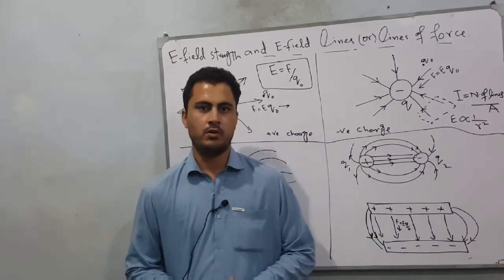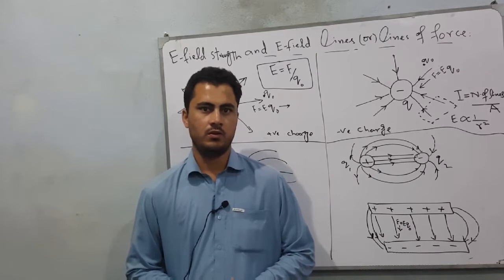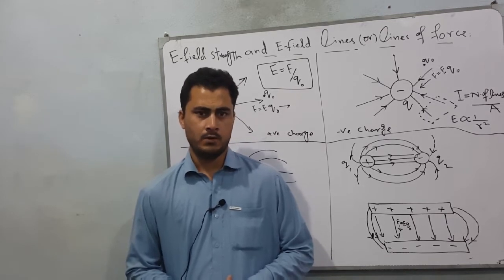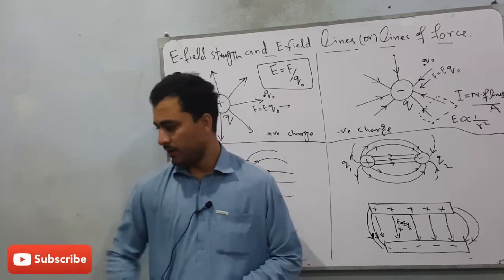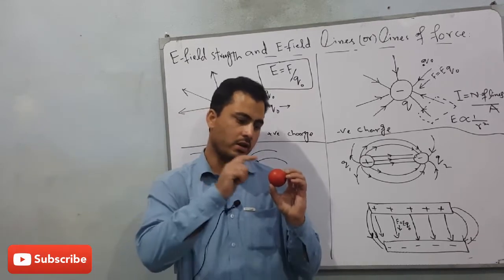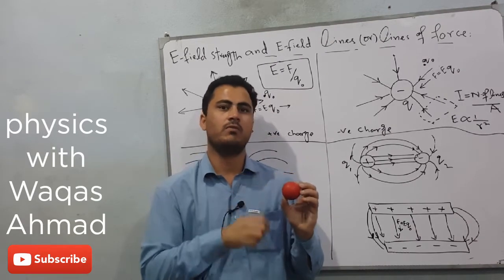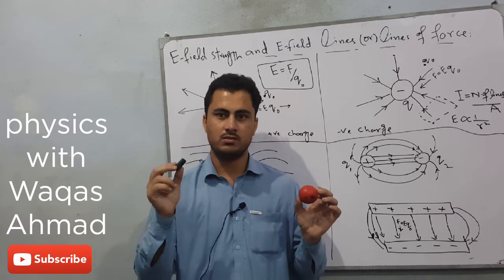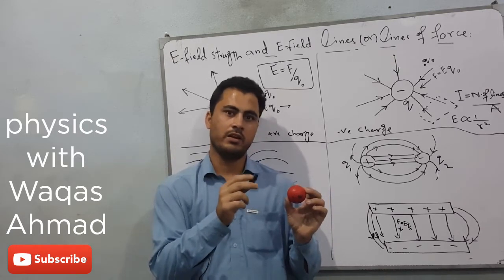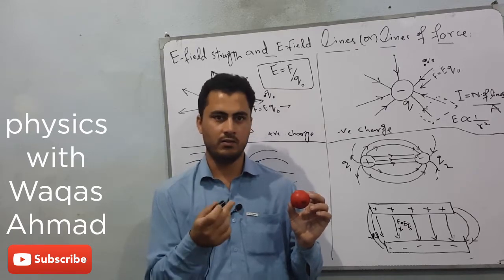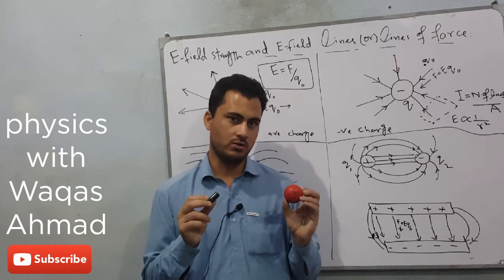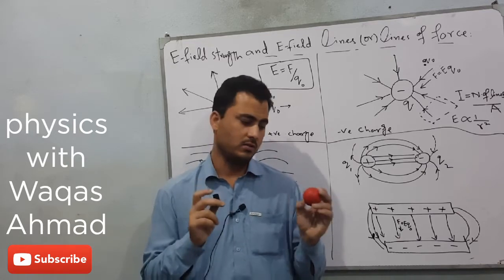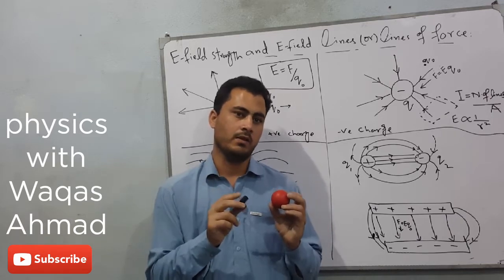Hello viewers, I hope all of you are fine. Today I'm going to talk about what is electric field, what is electric field strength, and what are electric field lines, and how we can represent these electric field lines. Electric field is basically the space or region around a charge in which its electrostatic force can be felt by another test charge. When we bring this test charge towards the source charge, it will either be attracted or repelled, depending upon the nature of these two charges.